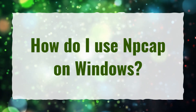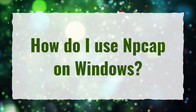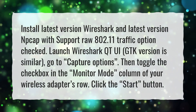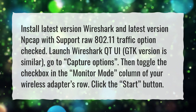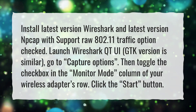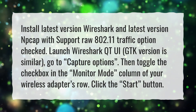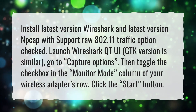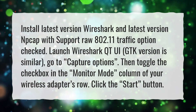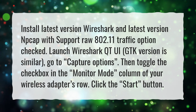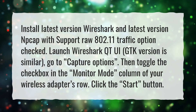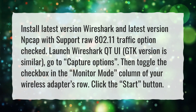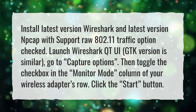How do I use NP-CAP on Windows? Install the latest version of Wireshark and the latest version of NP-CAP with the support raw 802.11 traffic option checked. Launch Wireshark QTUI (GTK version is similar), go to Capture Options. Then toggle the checkbox in the Monitor Mode column of your wireless adapter's row. Click the Start button.